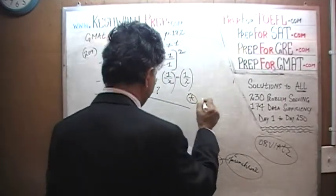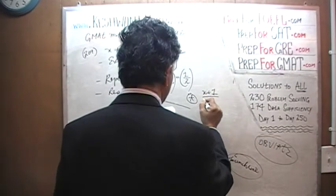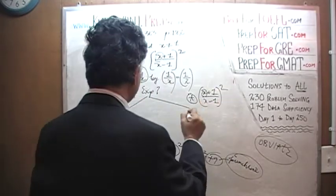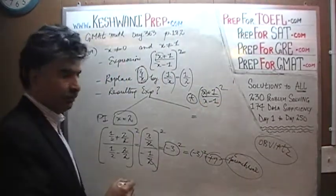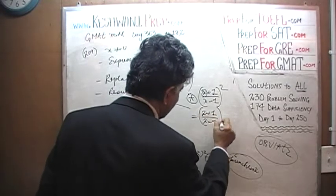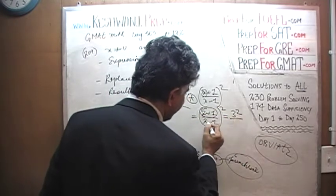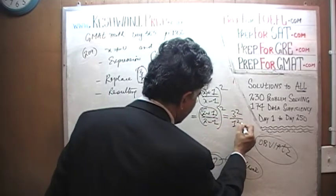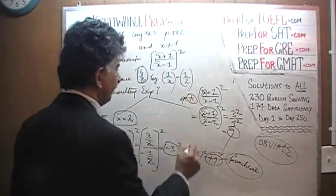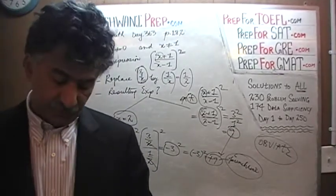Answer choice A says x plus 1 over x minus 1, whole squared. We are going to replace x with 2, so we end up with 2 plus 1 over 2 minus 1, whole squared. 2 plus 1 is 3, and 2 minus 1 is 1, so we end up with 3 squared over 1 squared, which is just 9. Answer choice A. We got lucky — the answer turns out to be A.